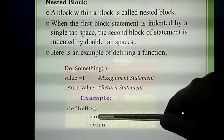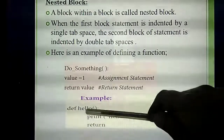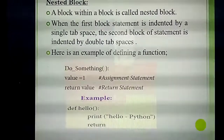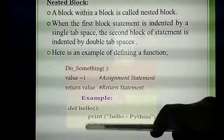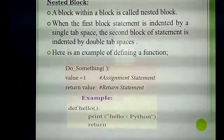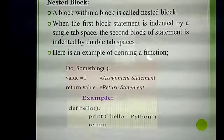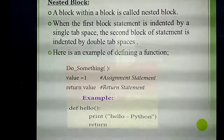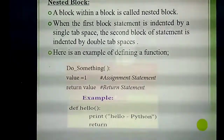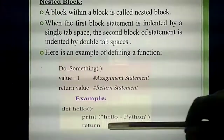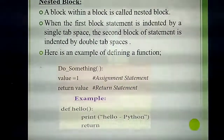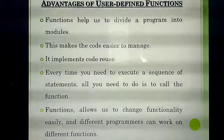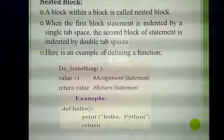Inside the function, write 'print("Hello Python")' with four spaces indentation. After that, 'return'. If you find a return statement, the program automatically exits the function. The output for this function will be 'Hello Python'.